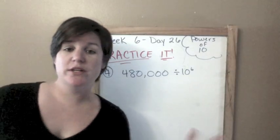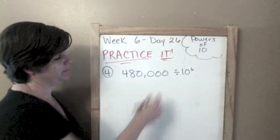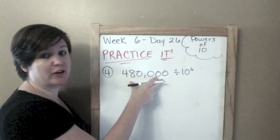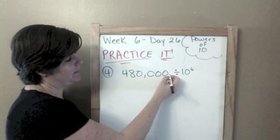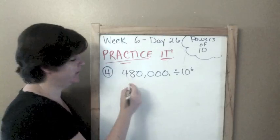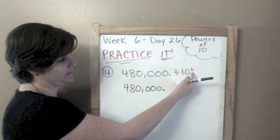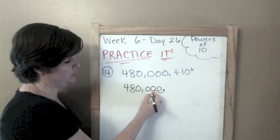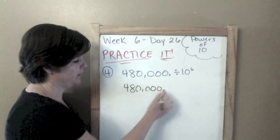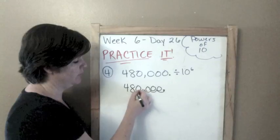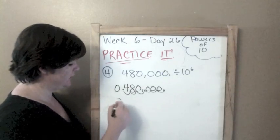One more to go everybody, last one. Number four: we've got 480,000 divided by 10 to the sixth power. I'm dividing, so am I making this number greater or smaller? I'm making it smaller. I'm going to take my imaginary decimal and go to the left. How many jumps am I going to make to the left? Six, my exponent. One, two, three, four, five, six. That's where my decimal goes. I'm going to put a zero right on top in the ones place, so 0.48. I don't need all these zeros behind it, so 0.48 is your answer.